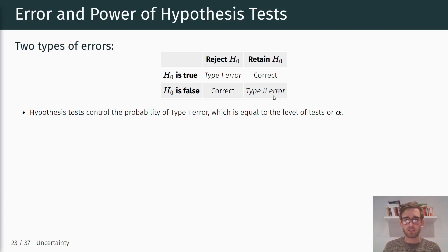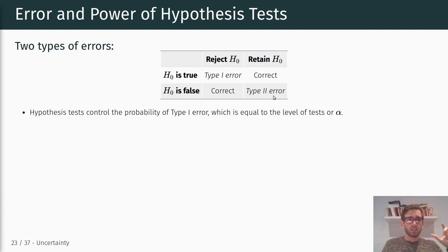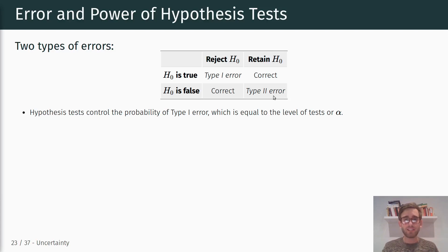If our p-value is 0.001 and we reject the null, we are saying it's very unlikely we would have observed such a sample under the null. How unlikely? Exactly 0.001. So if we reject the null, we have a 0.001 probability that we falsely rejected it — that is, we made a Type I error. That's why the significance level alpha or the p-value gives us the probability of a Type I error, but tells us nothing about the Type II error.